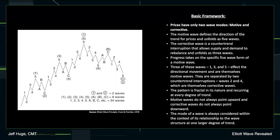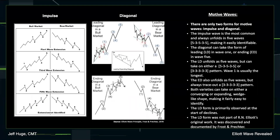Motive waves do not always point upwards, and corrective waves don't always point downward. The mode of a wave is always considered within the context of its relationship to the wave structure at one larger degree of trend. Motive waves really define the direction of the market. There are only two forms of Motive Waves: the impulse and the diagonal. The impulse is the most common of the two, and it always unfolds in five waves, in a specific 5-3-5-3-5 pattern, making it very easily identifiable.